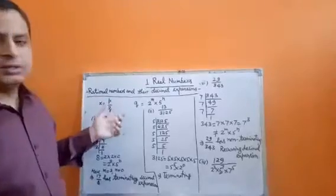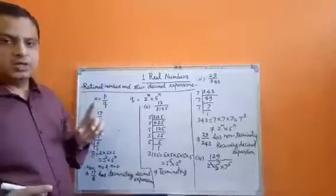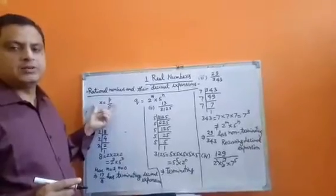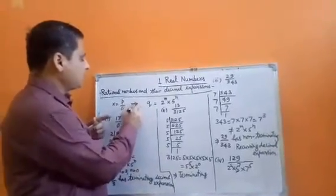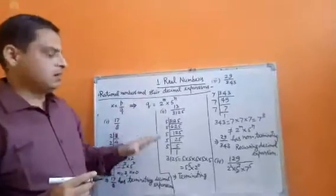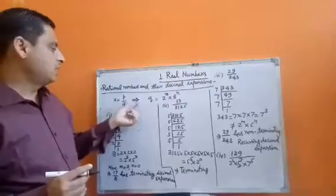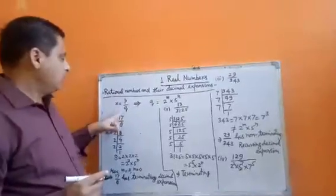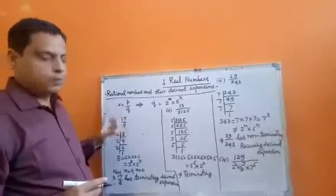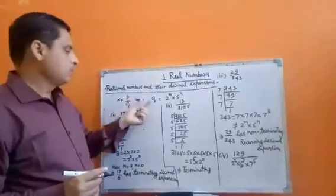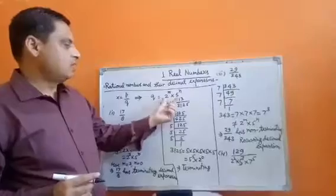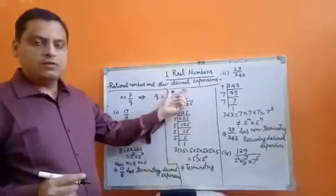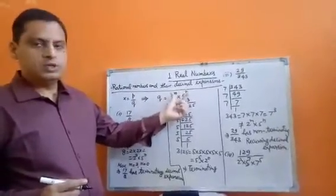Here are some more results about decimal numbers and their decimal expansion. If a number is of the form x equal to p upon q — that means if a number is a rational number — then without doing the long division process we can check which type of decimal expression the number has. If a number is a rational number, it can be written in the form p upon q, and if the denominator q has factors of the type 2 power m into 5 power n, where m and n are any positive integers, any one of m and n can be 0 but both cannot be 0 at the same time.